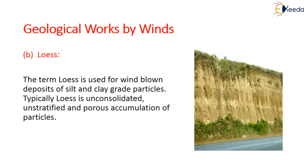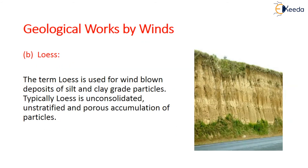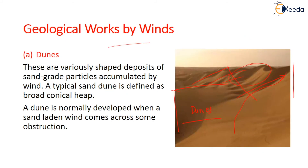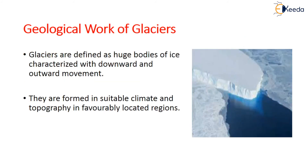The term loess is used for windblown deposits of silt and clay grade particles — unlike dunes which are mainly sand grade particles, loess is mainly silt and clay. Loess are unconsolidated, stratified, and porous accumulations of these particles. So dunes are mainly sand grade, while loess is mainly silt and clay accumulation by wind.